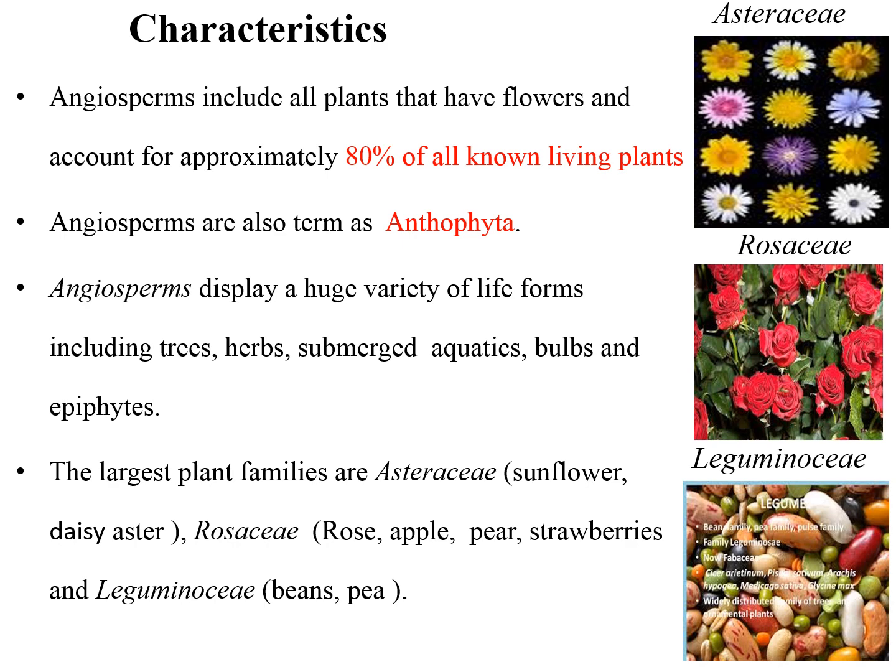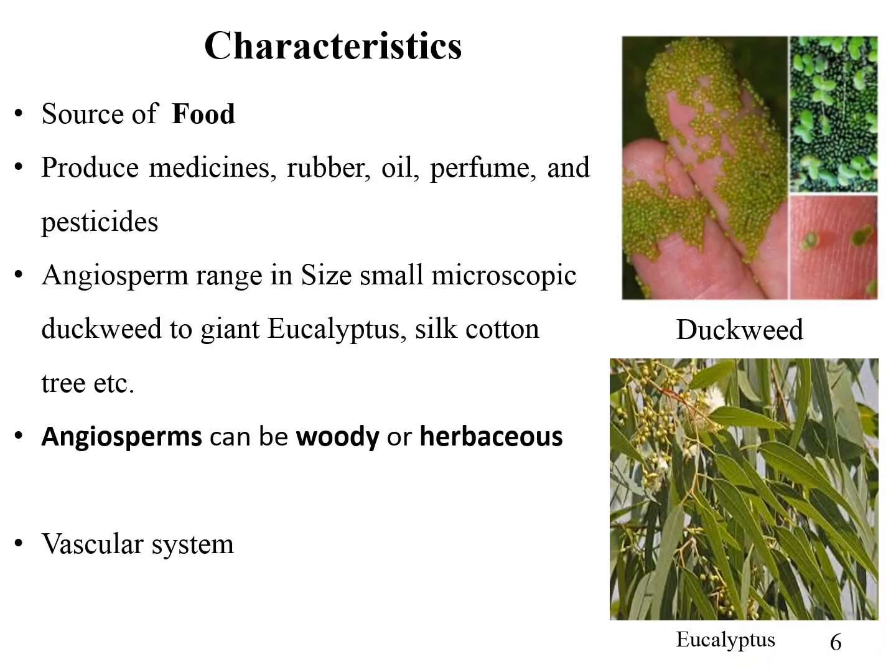The largest plant families are Asteraceae, which includes sunflower and daisy; Rosaceae, including rose, apple, pear, and strawberries; and Leguminaceae, including beans and pea. Members of this phylum are used as a source of food on which humans and other mammals rely, and are used in the manufacture of a wide range of products including medicine, rubber oil, perfume, and pesticides.